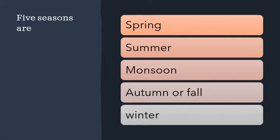Can you repeat after me the five different seasons? Spring, Summer, Monsoon, Autumn or Fall, Winter. You can just call it Autumn. Once again with the spellings: S-P-R-I-N-G Spring, S-U-M-M-E-R Summer, M-O-N-S-O-O-N Monsoon, A-U-T-U-M-N Autumn, W-I-N-T-E-R Winter.